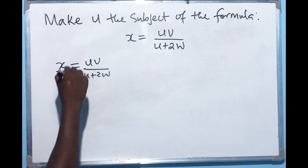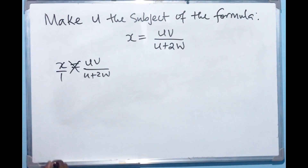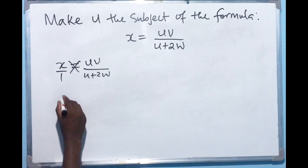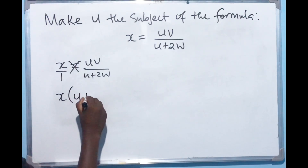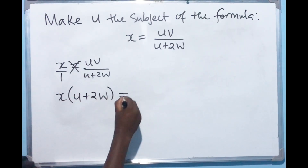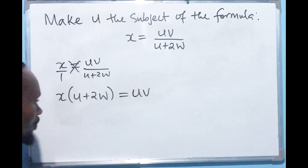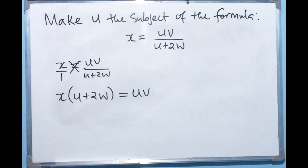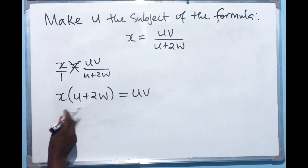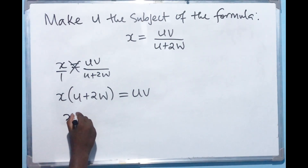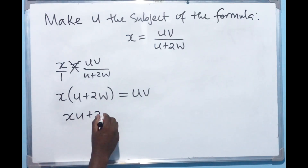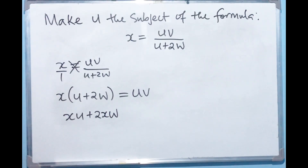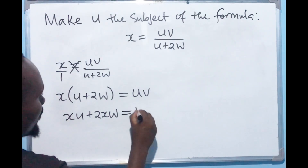After that being done, you can cross multiply. We will have x multiplying that, so we have x times (u plus 2w) which will equal to uv. Now here we can open the brackets, so we are going to have xu plus 2xw.